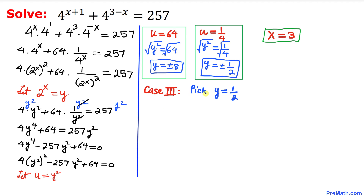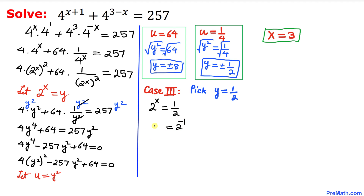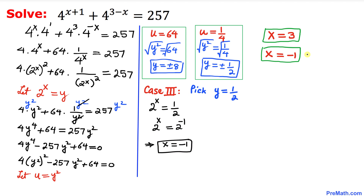Case 3: y = 1/2. Since y = 2^x, we have 2^x = 1/2 = 2^(−1). The bases are the same, so we equate exponents: x = −1. Our solution for case 3 is x = −1.